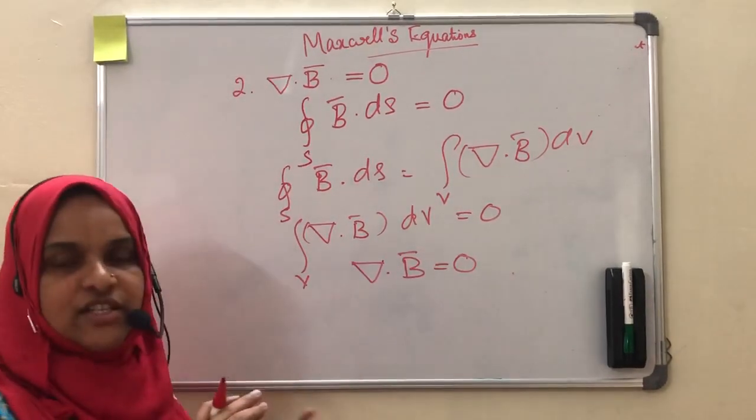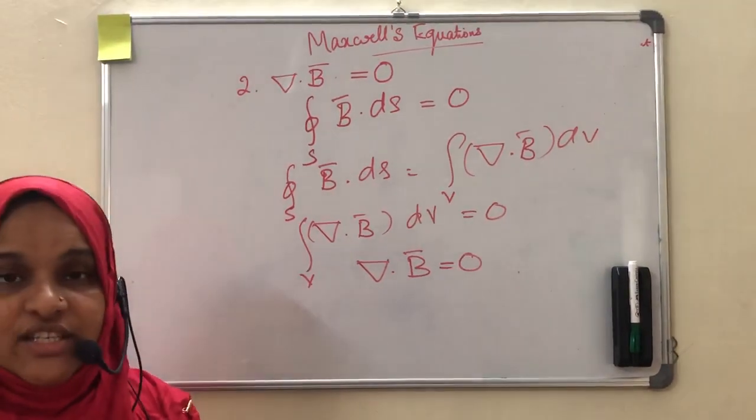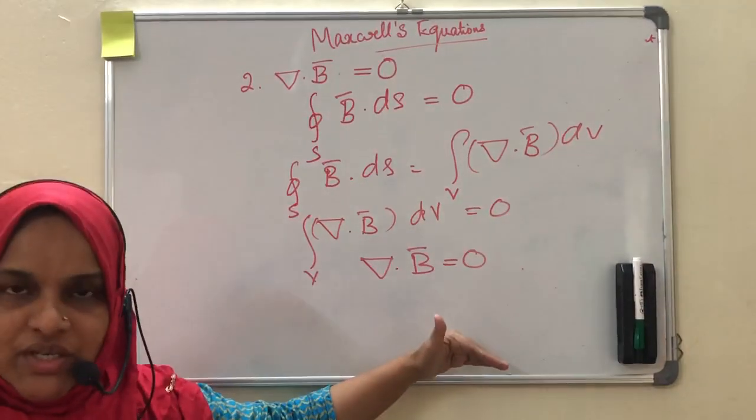That is, divergence of magnetic flux density is equal to 0. That is the second Maxwell's equation.